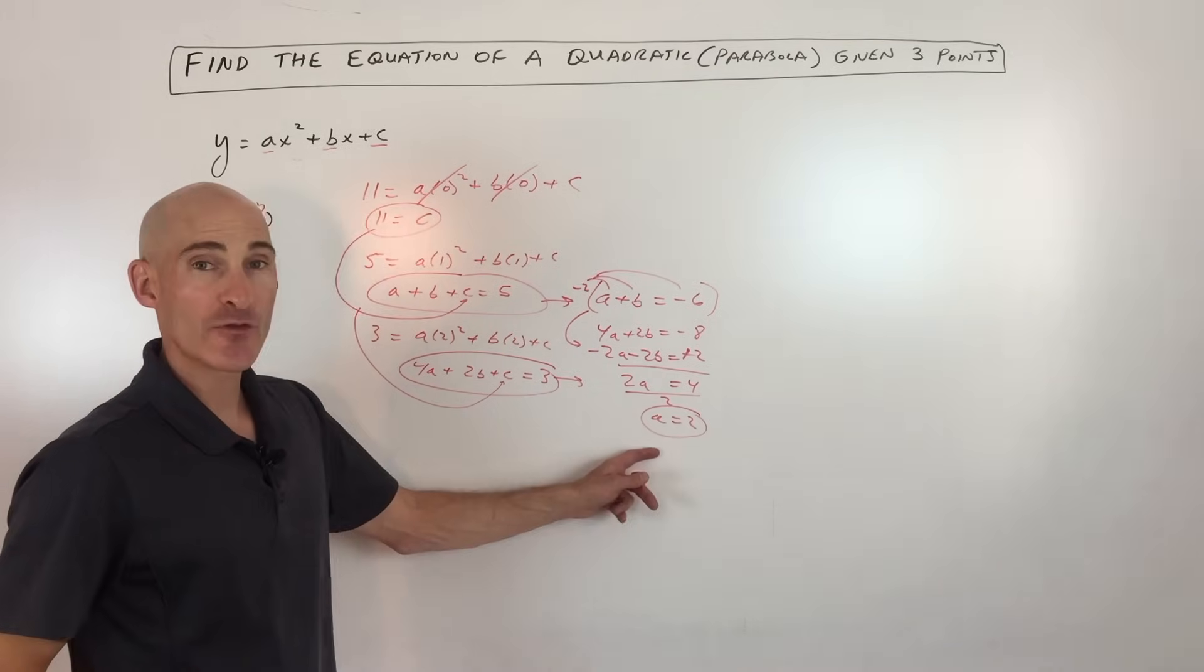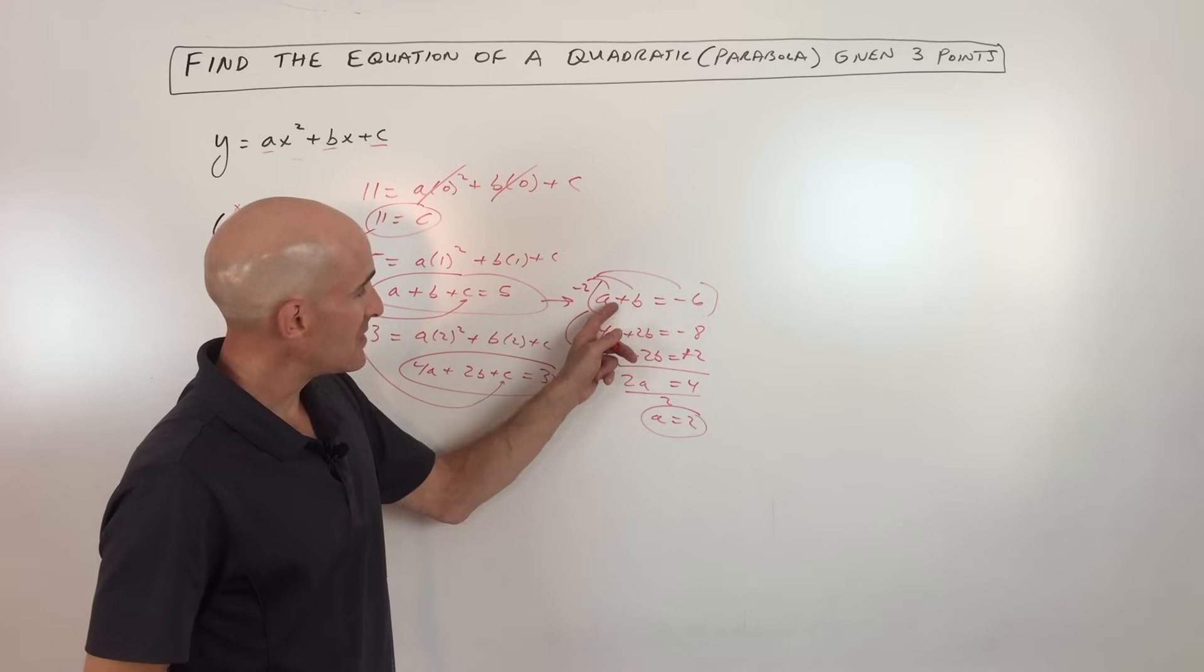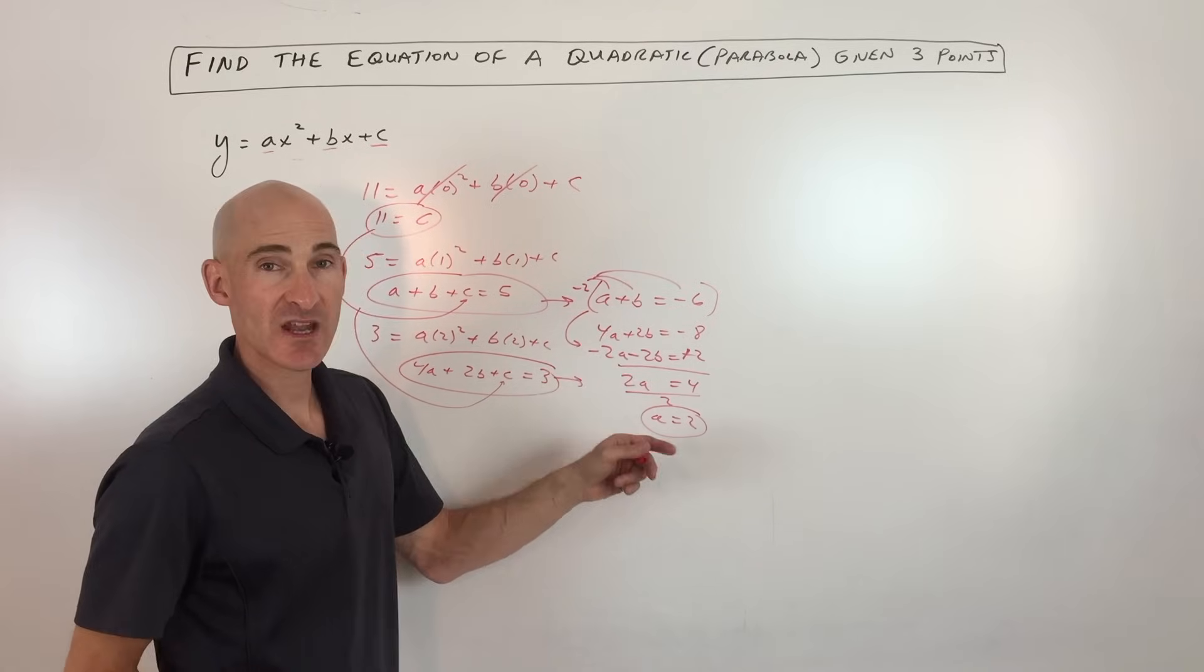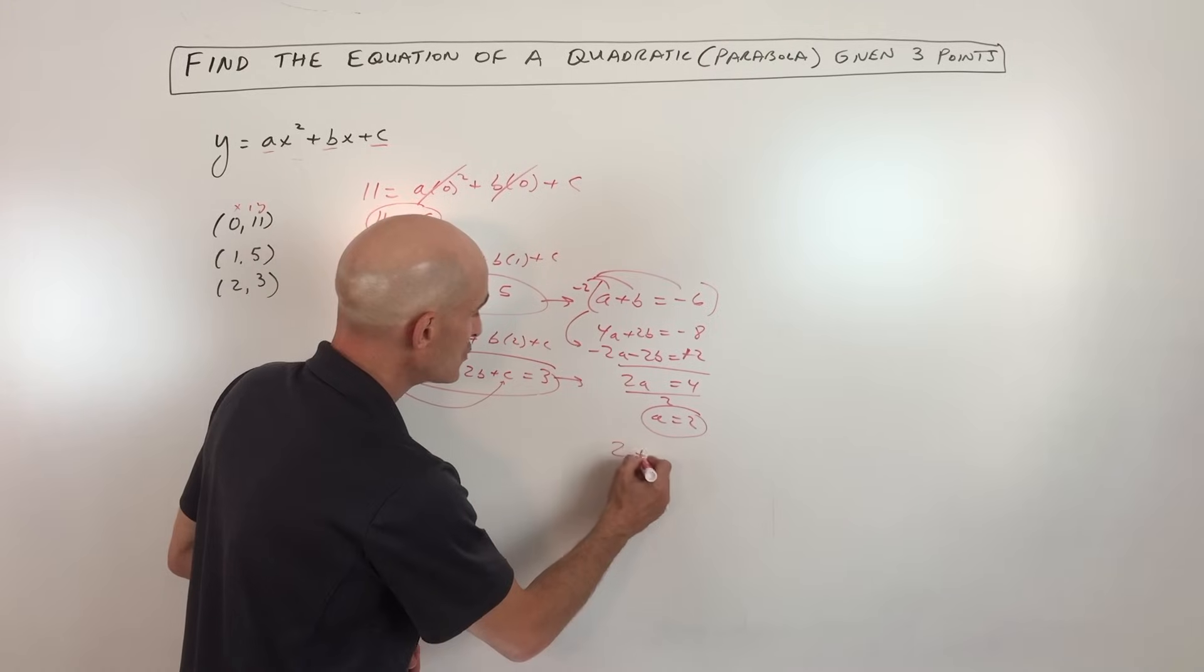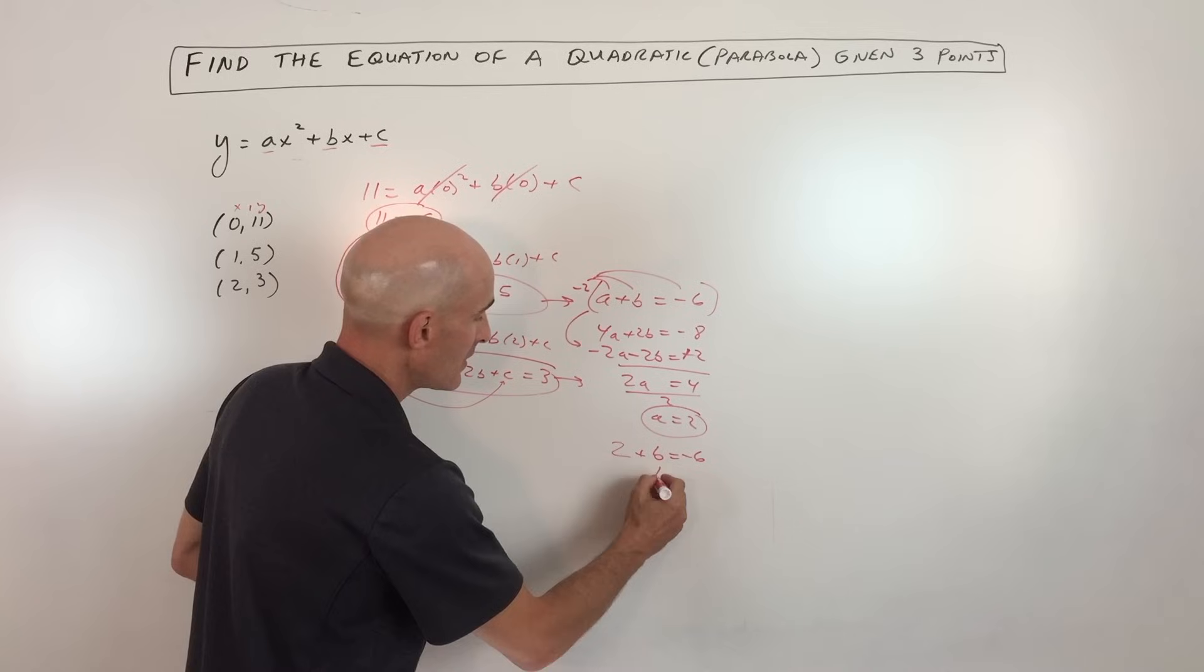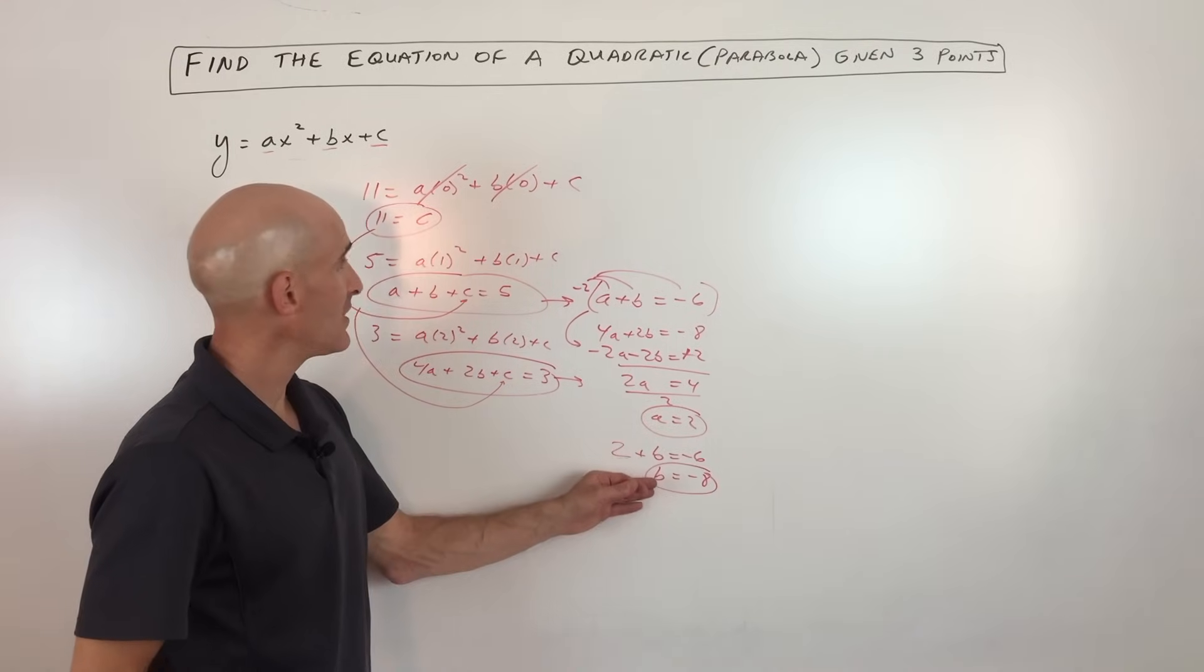Now how do we solve for b? Well, we can put a back in here or here or here, any one of these equations that has two variables. Let's put it in here. So if a is 2, we get 2 plus b equals negative 6. Subtract 2. And you can see b is going to be negative 8. So now we have a, b, and c.